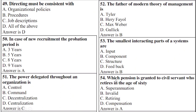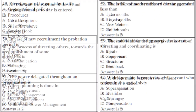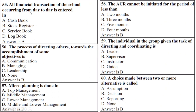Question 54: Which pension is granted to a civil servant who retires at the age of 60 — right option is A: superannuation. All financial transactions of the school occurring from day to day are entered in — right option is A: cash book.